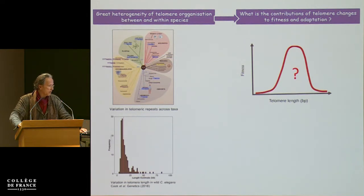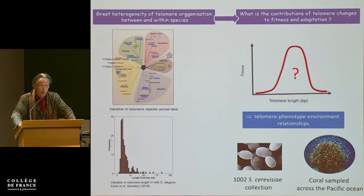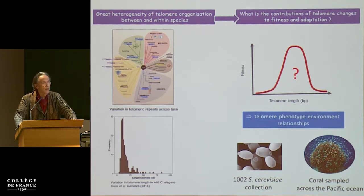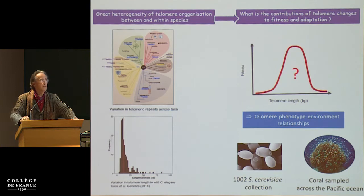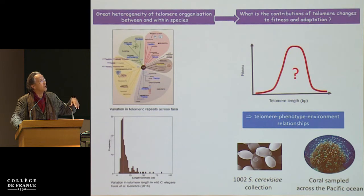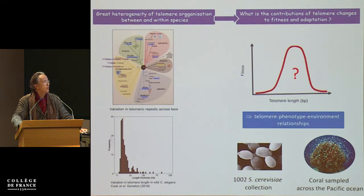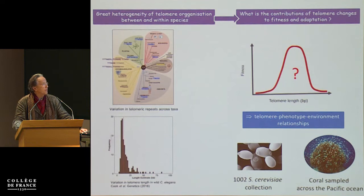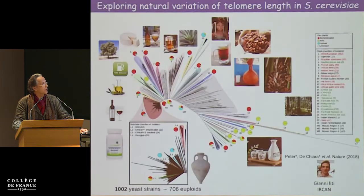To answer this key question, you need the confluence of molecular biology and eco-ecological approaches. You need to be able, in a large corpus of data, to study relationships between telomere parameters, phenotype, and environment. That's the basis of two stories I will present: the first takes advantage of the 1002 Saccharomyces cerevisiae genome collection, which has been fully sequenced, and the second is a coral story.